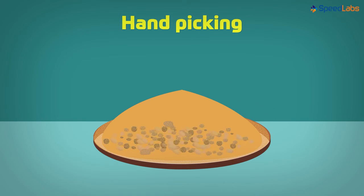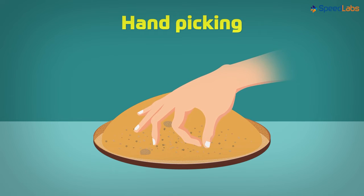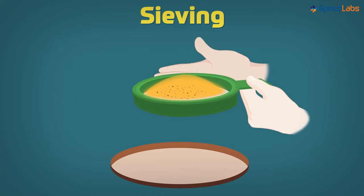If the size of pebbles is comparatively smaller, then hand-picking could be tedious. So perhaps, we opt for sieving the mixture. That would help serve the purpose.